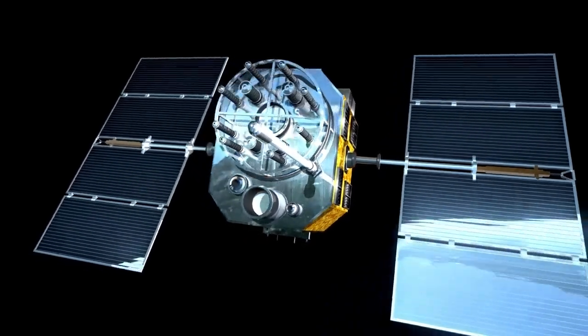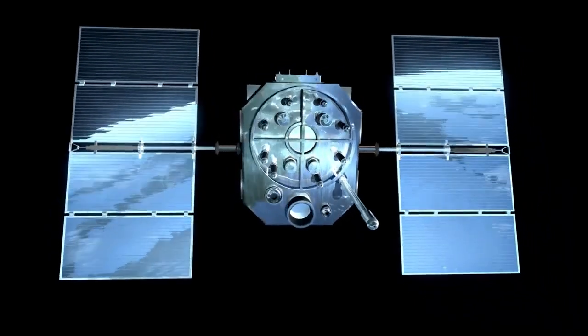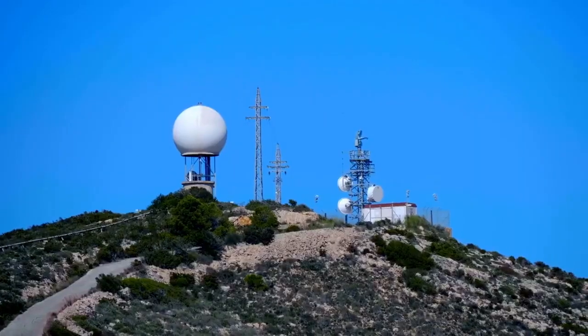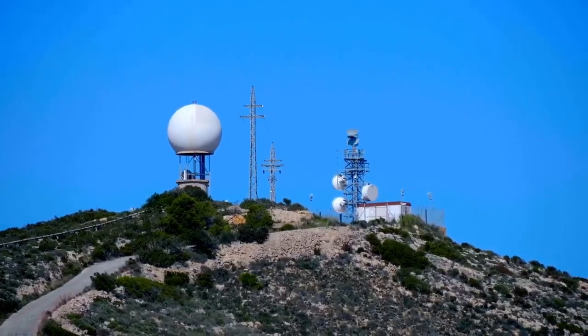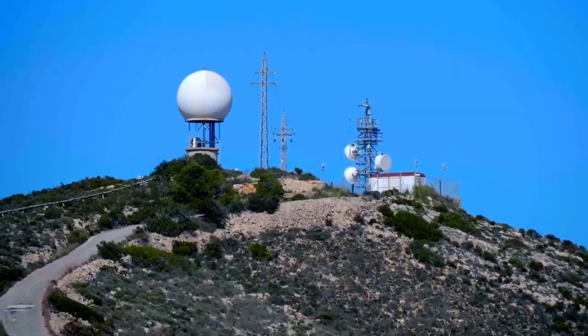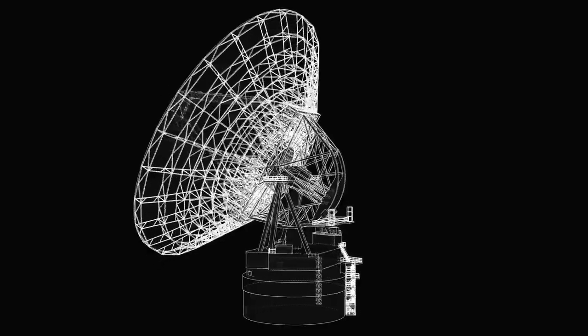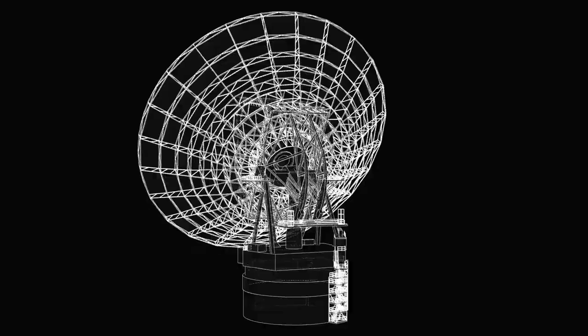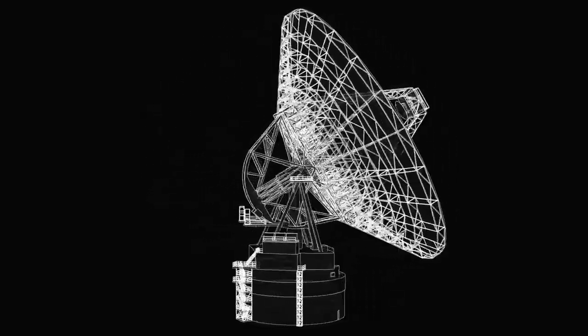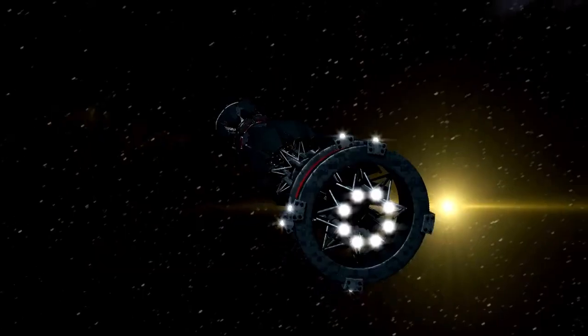In October 2024, Voyager 1 experienced a communication anomaly when it unexpectedly ceased sending data via its primary X-band transmitter, which operates at higher power and provides more detailed telemetry. Engineers detected a faint signal from the spacecraft using the backup S-band transmitter, which consumes less power but has a weaker signal strength. This transmitter had not been in use for 43 years, and its activation likely resulted from the spacecraft's automated fault protection system, designed to conserve energy and ensure operational longevity.